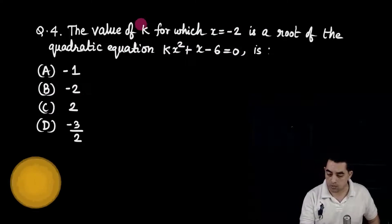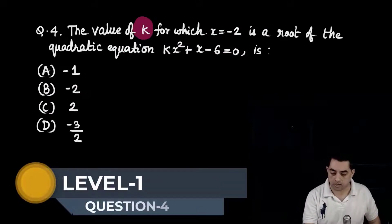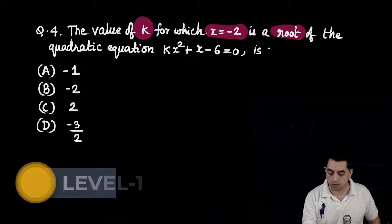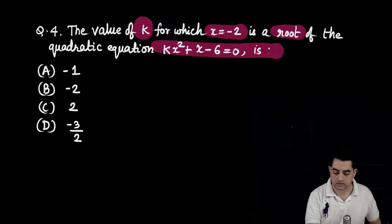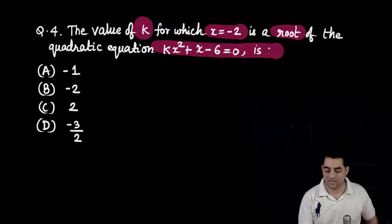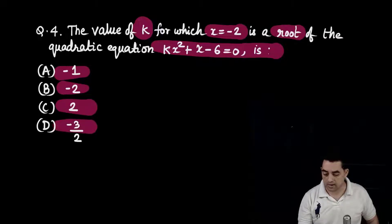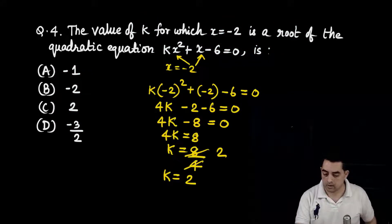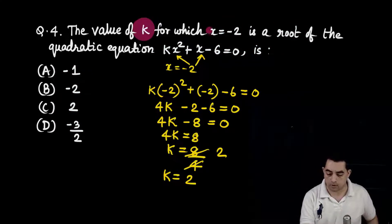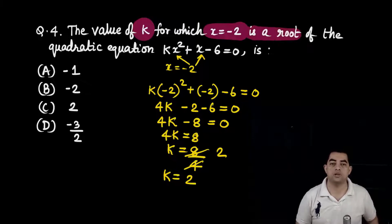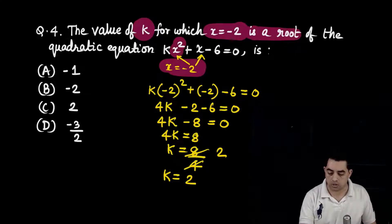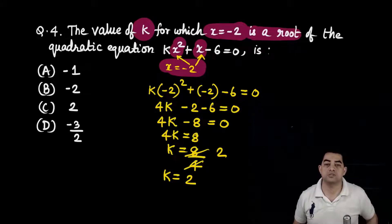Question number 4: the value of k for which x = -2 is a root of the quadratic equation kx² + x - 6 = 0. Options: -1, -2, 2, -3/2. Since x = -2 is a root, we substitute x = -2 wherever x appears in the equation.